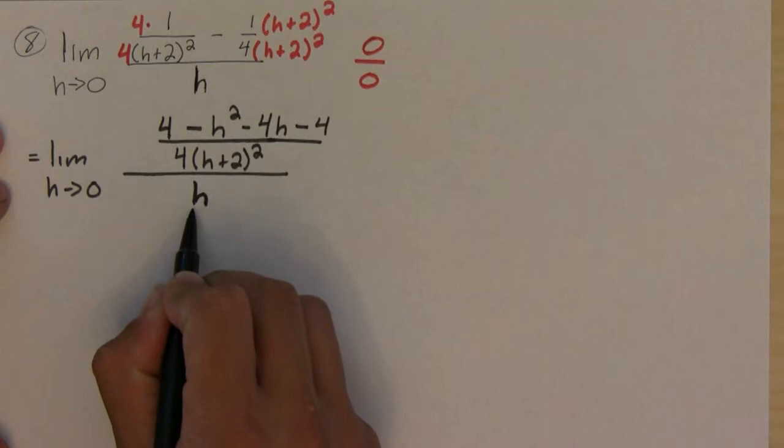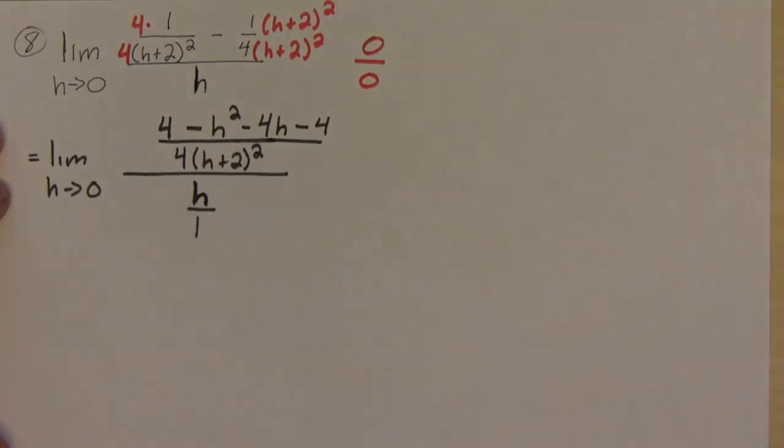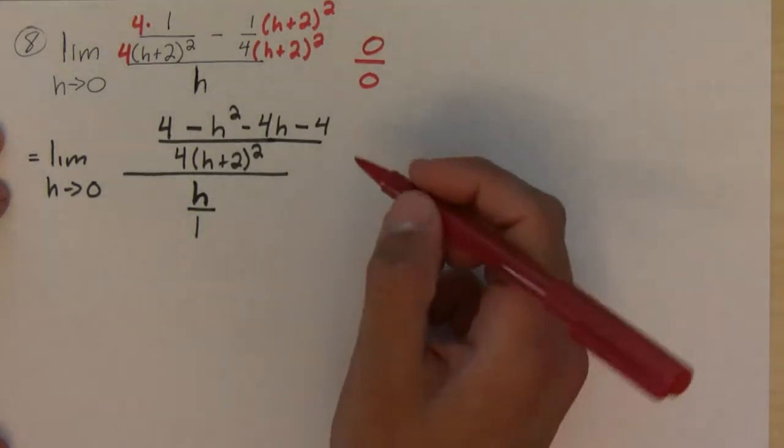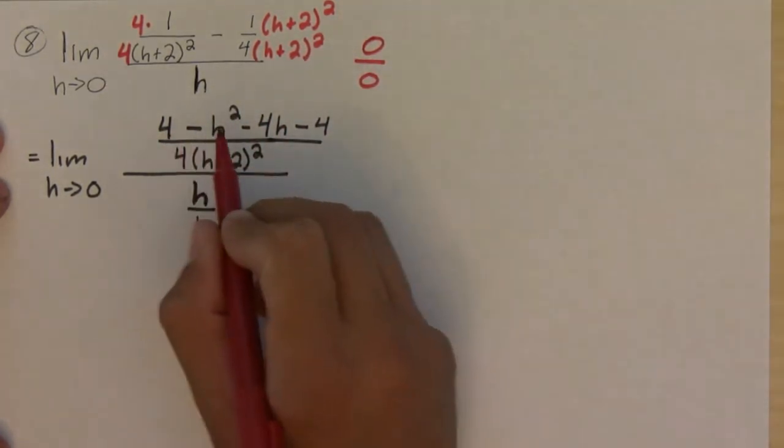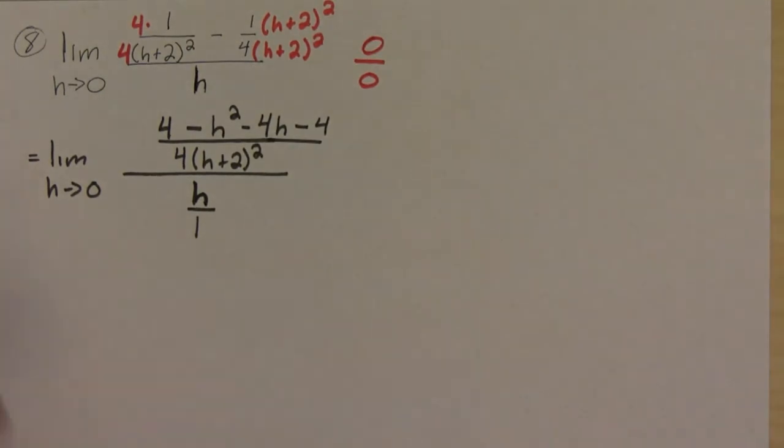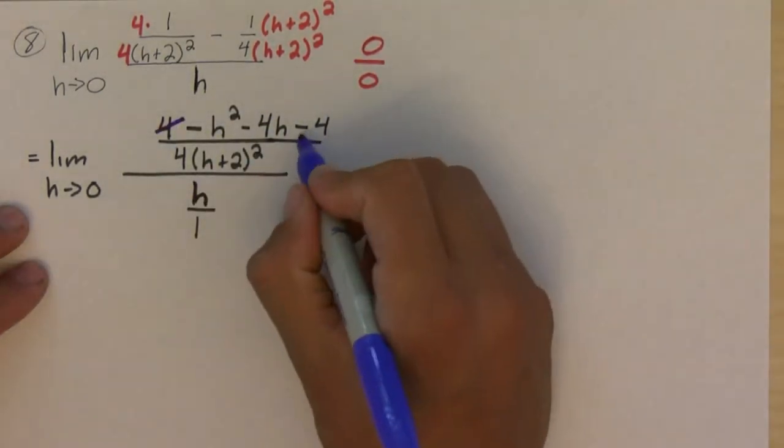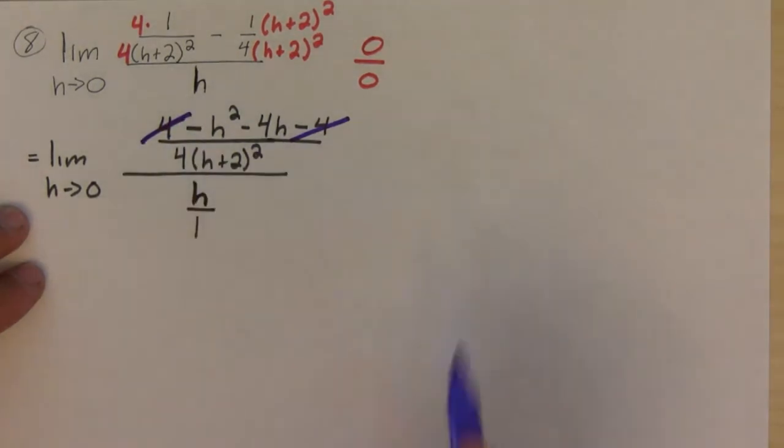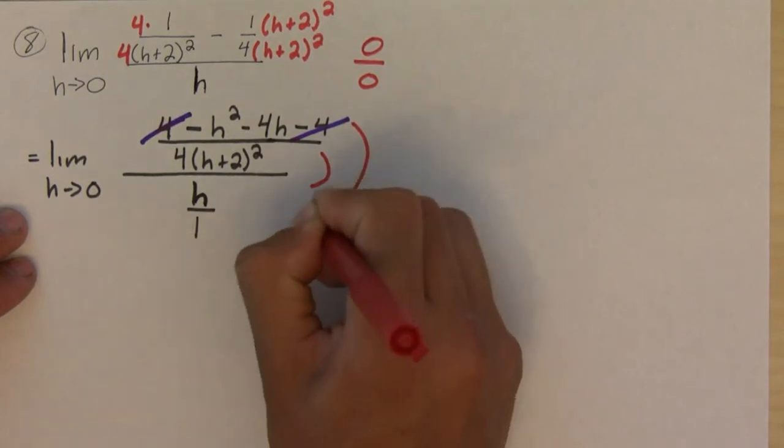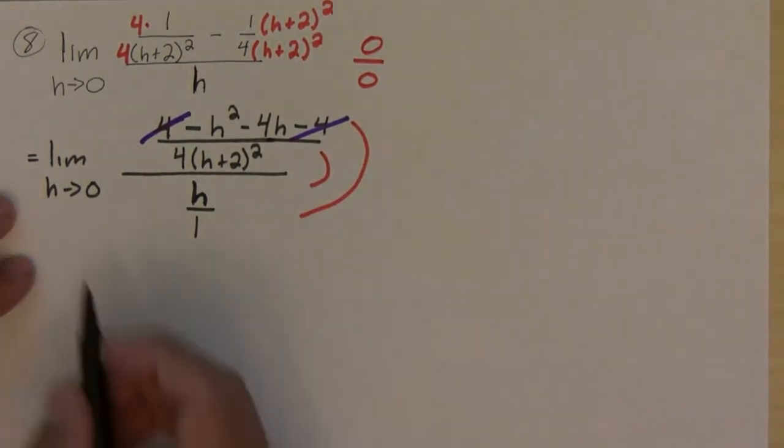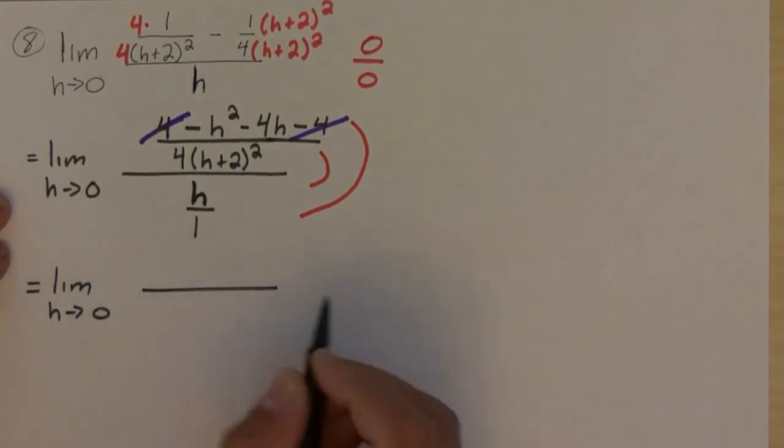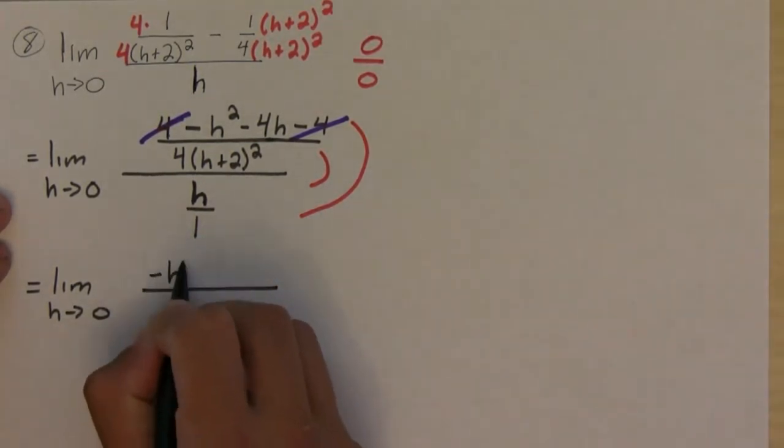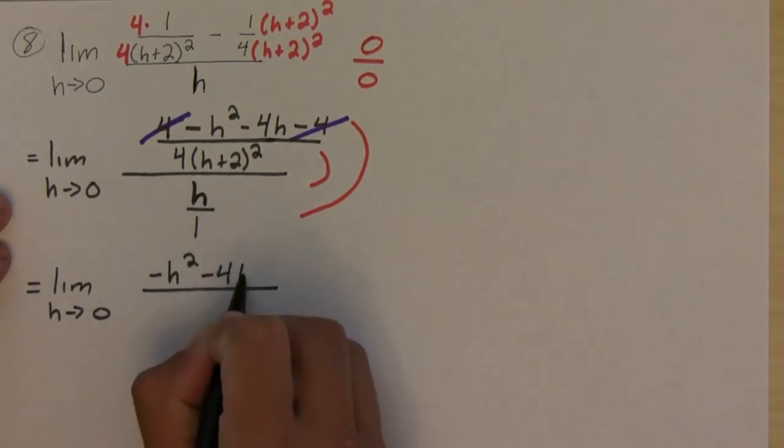Now I'm going to turn the denominator into a fraction. First of all, the 4s cancel, so notice that this 4 minus this 4 cancels them out. And if I use the law of the tortilla, I get that this is equal to the limit as h approaches 0 of minus h squared minus 4h.